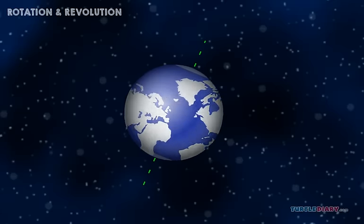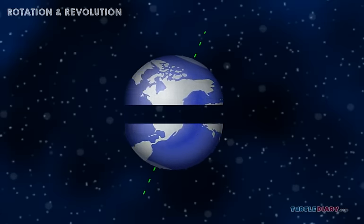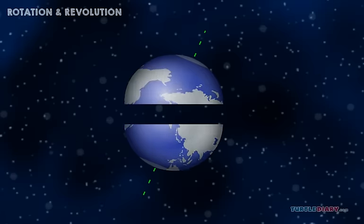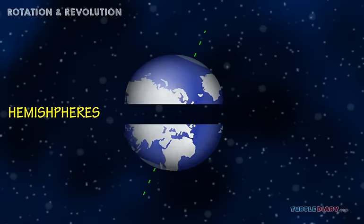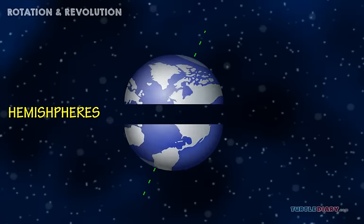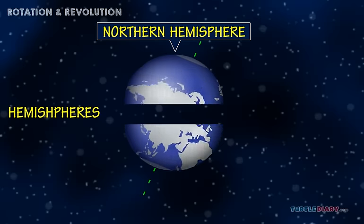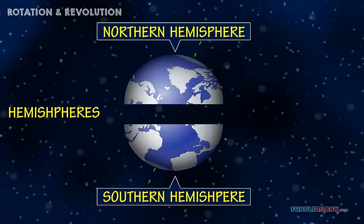We can think of the Earth as being in two parts—the top part and the bottom part. These are called hemispheres. The top of the Earth is called the northern hemisphere. The lower half is called the southern hemisphere.